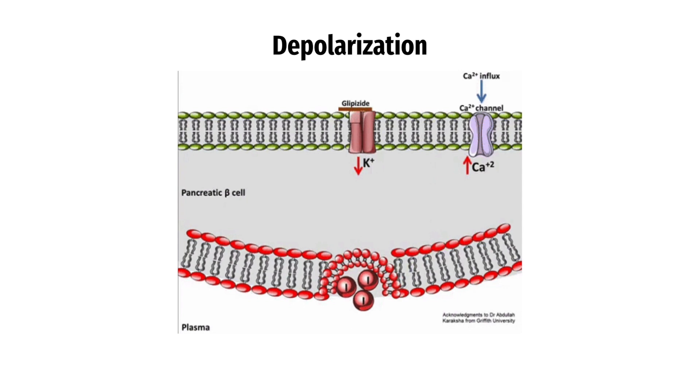An action potential is a rapid change in the cell membrane potential. This is achieved by the opening of voltage-gated ion channels, which allows for the flow of ions across the cell membrane.